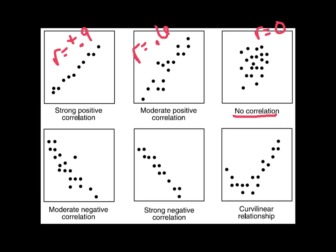Let's see, lower left-hand corner, moderately negative, we might say something like negative 0.6 or 0.7-ish. This one would be negative 0.9-ish in that ballpark. And then I don't want you to worry about the curvilinear one.